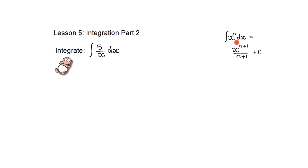If we try the next example using what we already know, I have to integrate 5 over x dx. But I see the x is in the denominator, and it shouldn't be, because if it's in the denominator I can't use this rule — it must be an x to the power n in the numerator. So if I rewrite this, I want to integrate 5x to the power negative 1, because I had a positive exponent 1 in the denominator, dx.